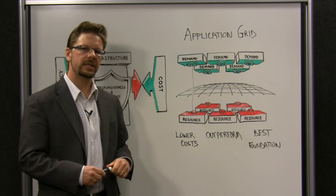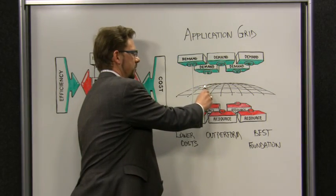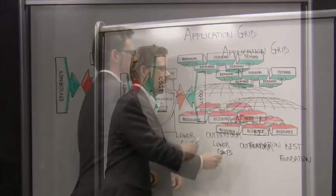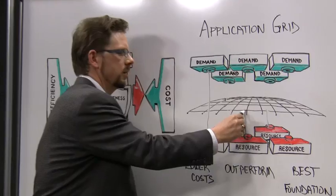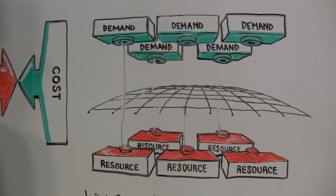In a grid computing approach, you decouple those resources from the demands. Demands ask the grid for a resource, and the resources which are plugged into the grid are dynamically adjusted by that grid to provide exactly what that demand requires.